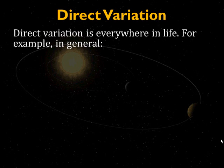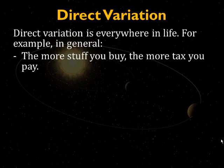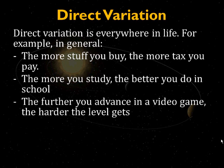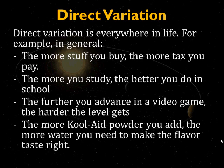Direct variation is everywhere in life, and some examples are: the more stuff you buy, the more tax you've got to pay. If you buy an Xbox versus buying a CD, the Xbox is going to have more tax attached to it. The more you study, the better you do in school. The more time you spend preparing homework and reading stuff over, generally speaking, the better you'll do on tests. The further you advance in a video game, the harder the level gets. Finally, the more Kool-Aid powder you add, the more water you need to add to it to make the flavor taste right.